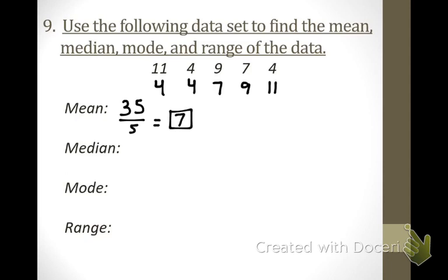What does the median mean? The middle number. What's my middle number? 7. Some of you tried to say 9 — you have to put the data set in order from least to greatest before finding the middle number. Show your work by simply circling the middle number. The mode is the number that occurs the most — which one occurred twice? The number 4. You don't have to show work for that one.